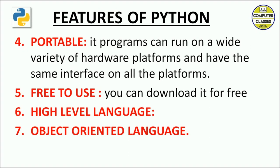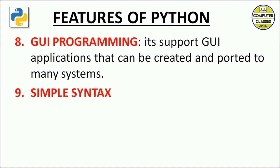Next is GUI — Graphical User Interface. Python supports GUI applications that can be created and ported to many systems. Python provides various options to develop graphical user interfaces, one of which is tkinter. Tkinter is the standard graphical user interface library for Python, which provides features like creating buttons, menus, and other user interface components.